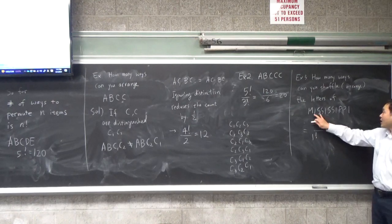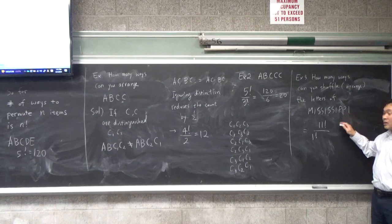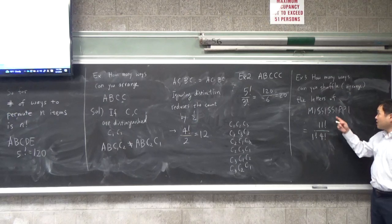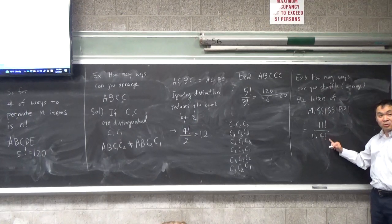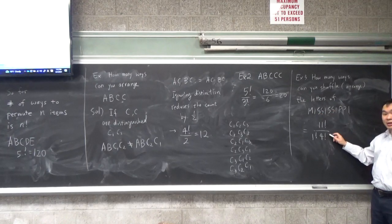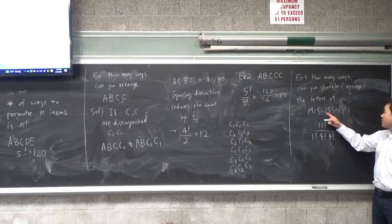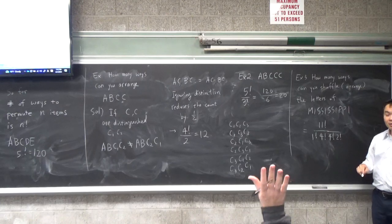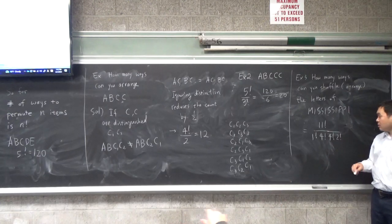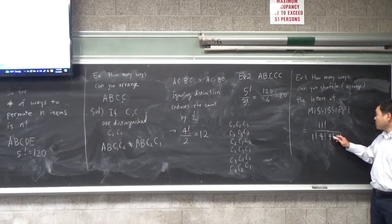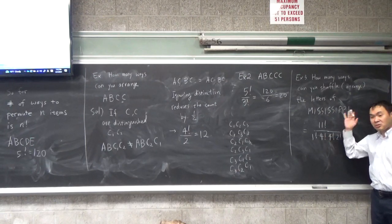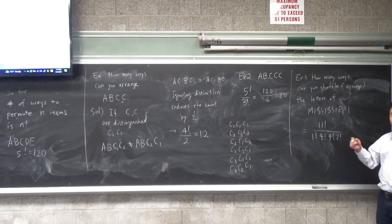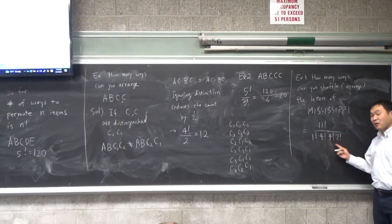Anytime you have the same repetitions, you just divide by that factorial. S appears four times — divide by four factorial. And P appears twice — divide by two factorial. So you multiply all the denominators together. You have eleven factorial on top, and one of the four factorials cancels part of that, then four, three, two, one, then two. Four times two is eight, and three times two is six. So you get that many ways to shuffle it.